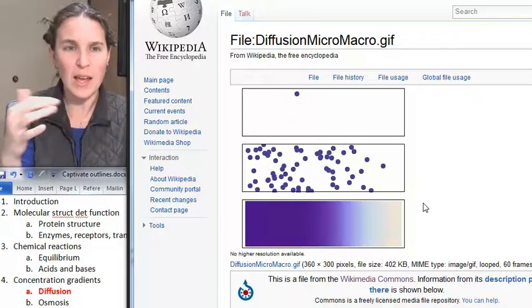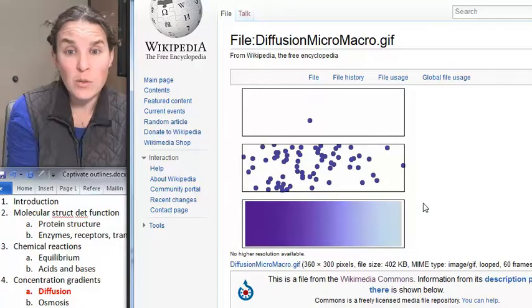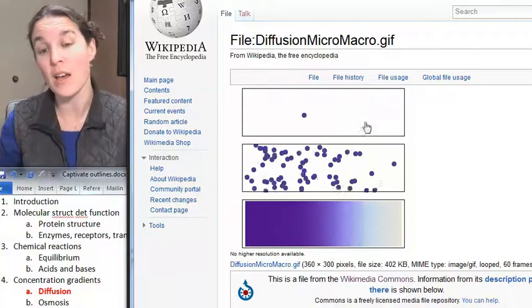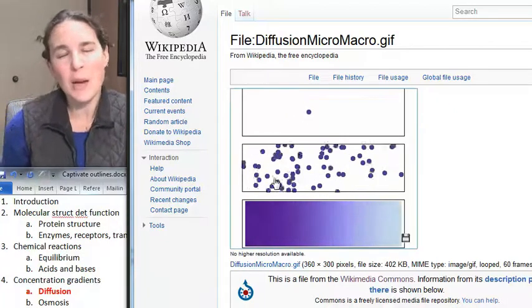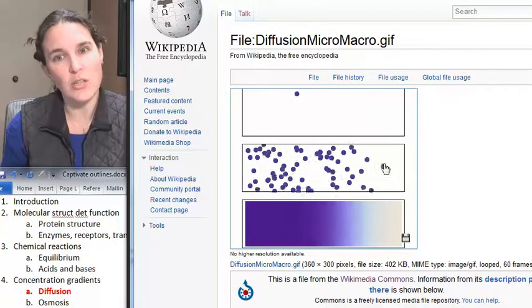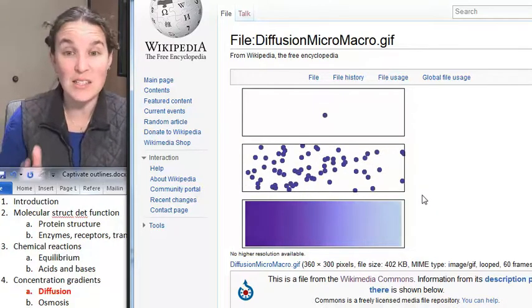Those little molecules just were moving. That's Brownian motion. And they move like that. Molecules move. They have a random kinetic energy that causes them to just move like that. And just by that random motion, they move from areas of high concentration to areas of low concentration. That's diffusion.